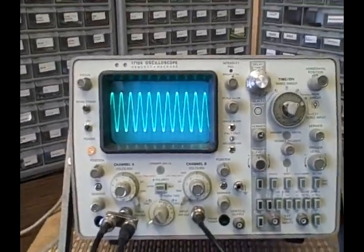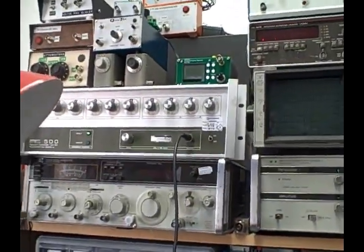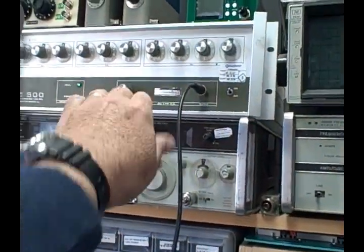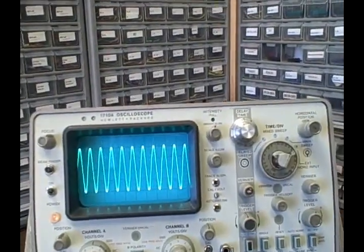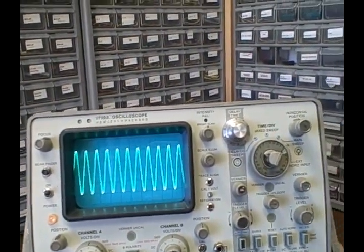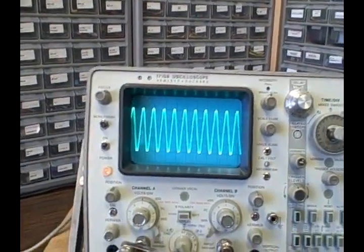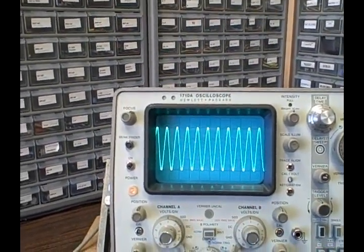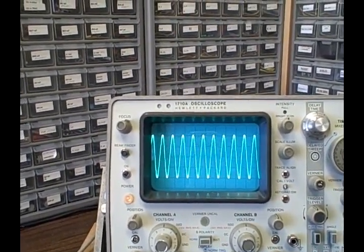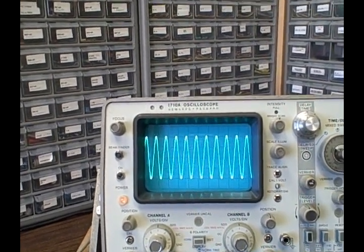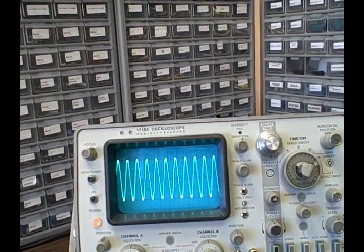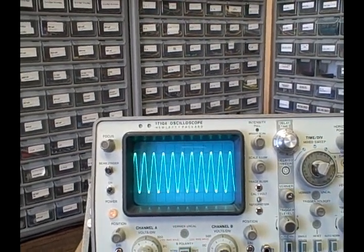Right now we're looking at a one megahertz signal coming from that PTS 500 unit back there, a very accurate signal generator. We are running on one volt per division vertical input, so we've got two divisions up, two divisions down, for four volts peak to peak or two volts peak.